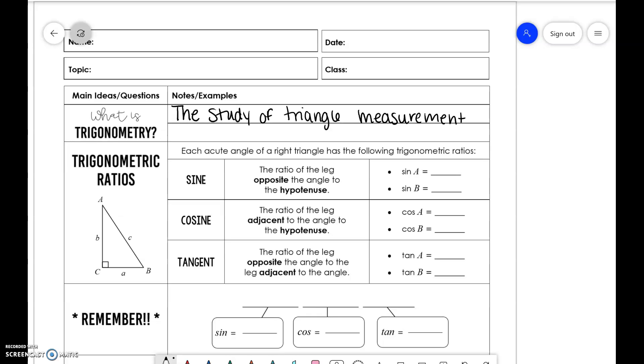In trigonometry, we have trig functions: sine, cosine, and tangent. Those are the three major ones that we're going to deal with. Sine is going to be the ratio of the opposite leg to the angle and the hypotenuse. So if we were looking at angle A, the opposite side would be side A and the hypotenuse is C. But if you look at sine of B, that means it's going to be B over C. So it just all depends on the angle that we want to talk about.